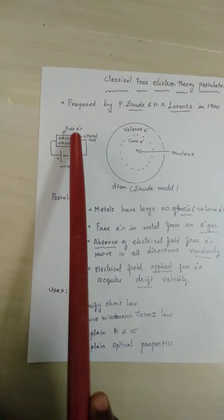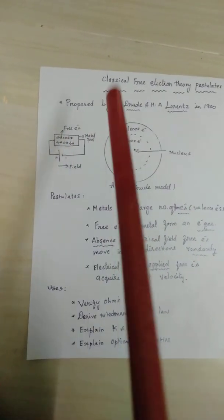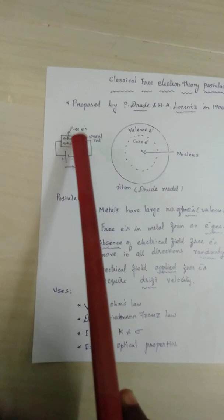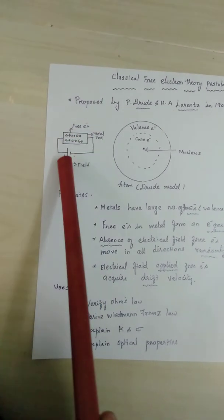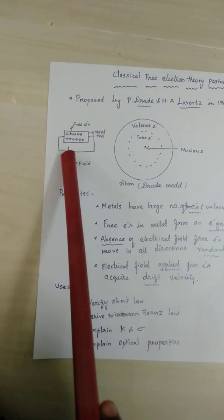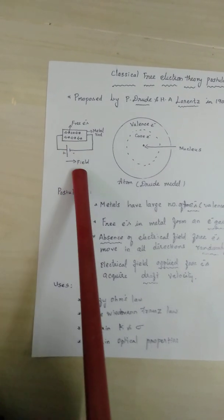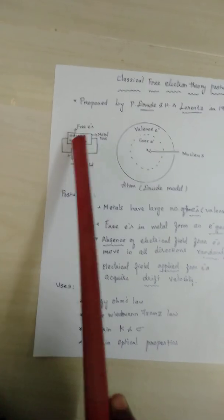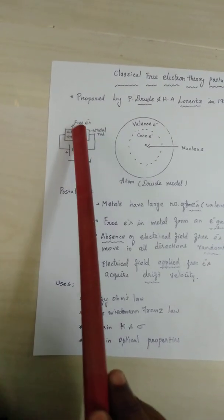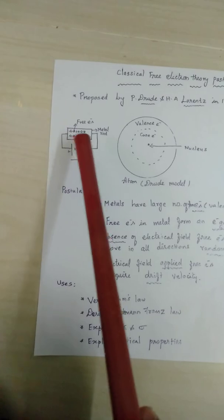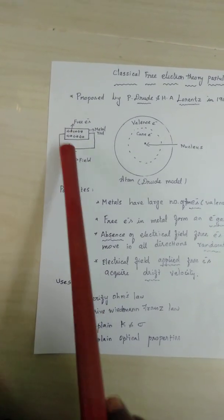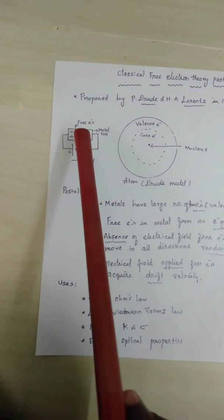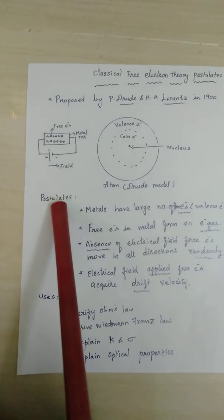This rectangular box is the metallic rod and the arrow marks represent free electrons. This positive and negative is the power supply we are going to apply the field. Without applying field these electrons will be in all possible directions, but when you apply field then these electrons will be drifted towards the positive potential. See this is the postulate explanation.